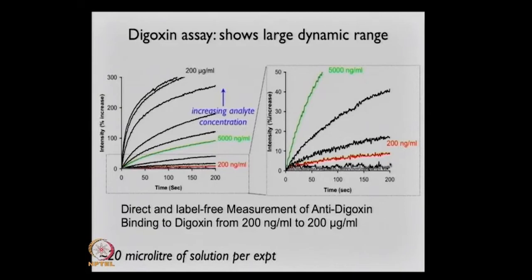Still pretty reasonable — I can still believe that's signal above noise. So we can go from 200 micrograms per mil to 200 nanograms per mil, label-free, in 20 microliters of solution in this experiment. I think that's quite good, but we can probably tweak it further. Of course, this is label-free only.